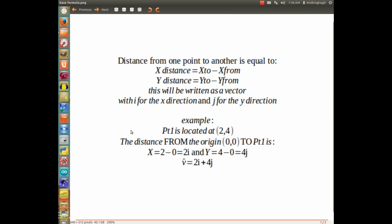which equals 4j. So our vector, which I just got that little hat over top of it, that tells you it's a vector, is equal to 2i plus 4j.